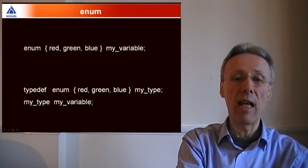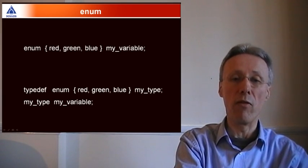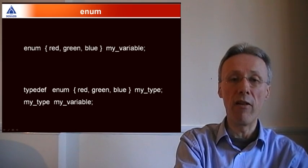We can also define a proper data type as an enum and then reuse that data type to define variables. At the bottom we have a typedef enum defining a new data type, my_type, that can take one of the three values red, green, and blue. And we then use my_type to define a variable, my_variable.